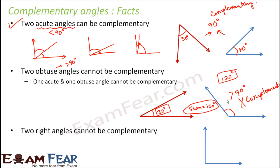Two right angles also cannot be complementary. One right angle is exactly equal to 90 degrees. For a right angle to be the complement of another angle, the other angle would have to be zero degrees, which is essentially nothing. Therefore, two right angles cannot be complementary.